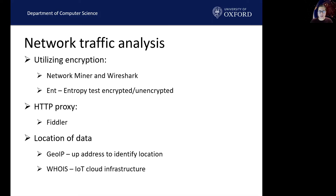The entropy test values run between 0 and 8. A high entropy value indicates randomness in the payload, which is most likely encrypted. Anything closer to 0 — low entropy — is more likely to be clear text. Although there is no definitive threshold, we set our threshold level to 7 to avoid missing any unencrypted traffic.